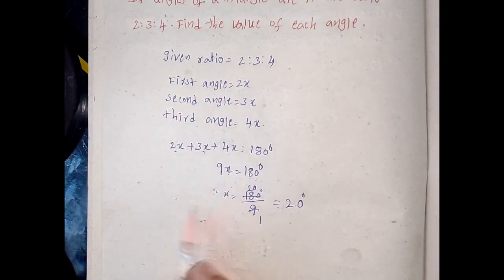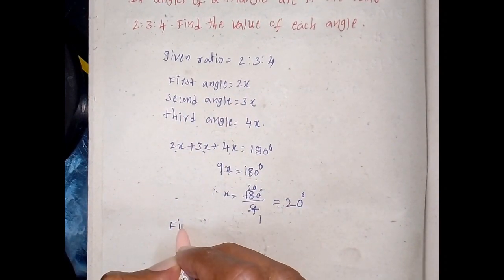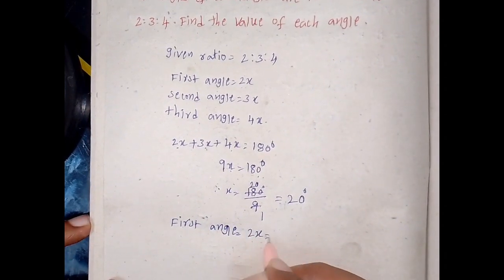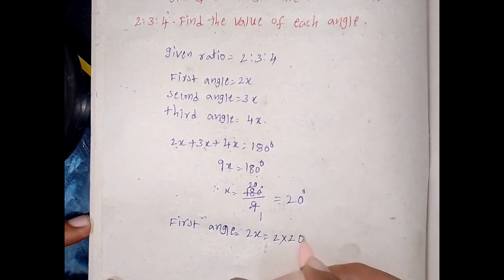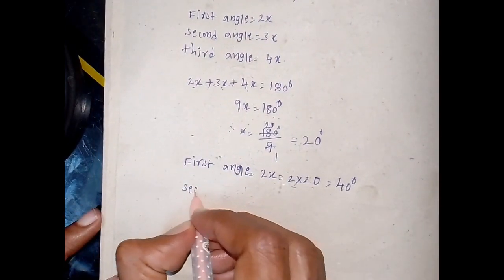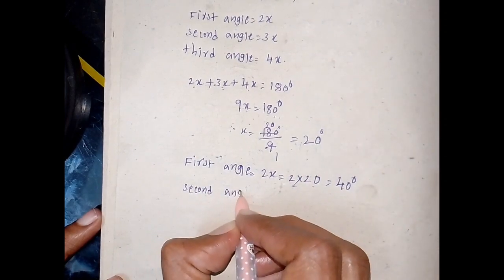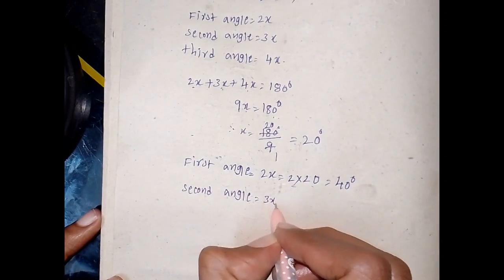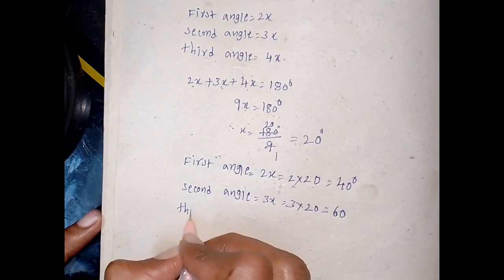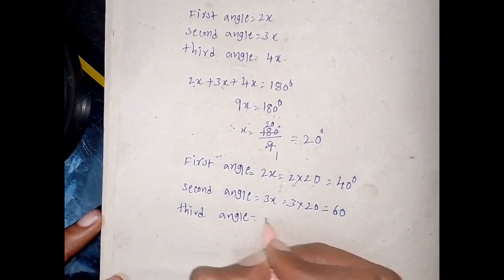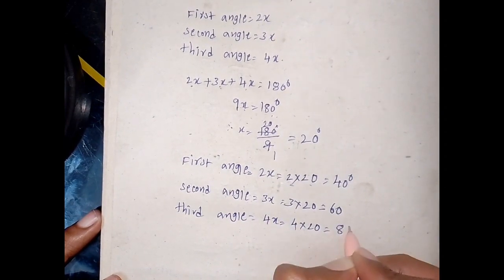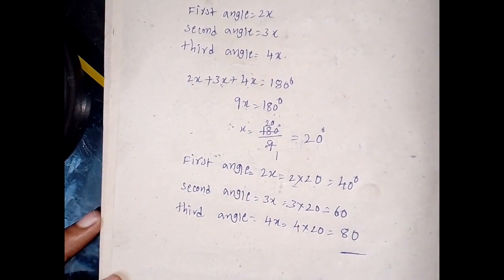First angle equals 2x equals 2 into 20 equals 40 degrees. Second angle equals 3x equals 3 into 20 equals 60 degrees. Third angle equals 4x equals 4 into 20 equals 80 degrees. This is the answer.